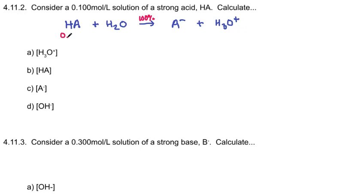So that means if this original amount was 0.100, you drop this into water and every single one of these breaks into A minus, so we'll get 0.100 of them. And H3O's will get 0.100 of them as well. And there won't be any of this left. All gone.